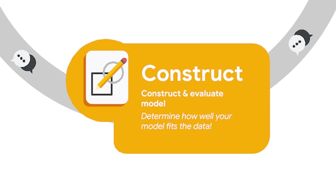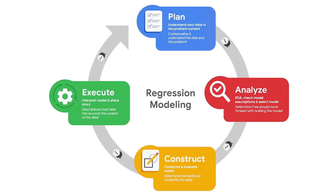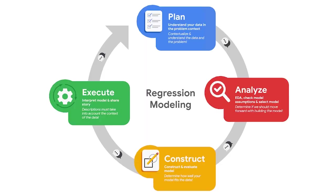A good understanding of statistics gives data professionals the power to construct meaningful models. After you analyze, you must construct. For regression analysis, this is where you actually build the model in Python or your coding language of choice. This step involves selecting variables, transforming the data as needed, and writing code. Even though you checked model assumptions before you built the model, many model assumptions need to be rechecked after the model is built. So you'll do that in the construct phase as needed. The last part of the construct phase is evaluating the model results — answering the questions: how good is my model? You'll choose metrics, compare models, and get preliminary results.